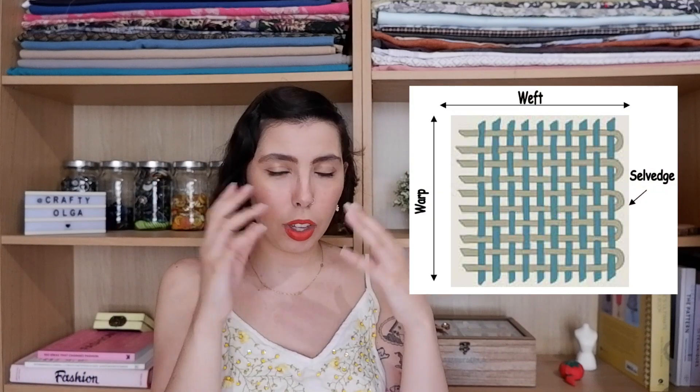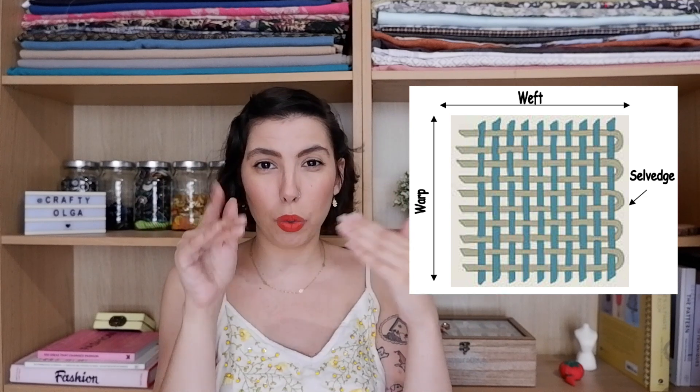Let's talk about weave types. The weave refers to how the threads are woven together to create the cloth, and just like with fibers, different kinds of weaves give different properties to your fabric. The weave is how the weft and the warp are interlaced. The warp is vertical and the weft is horizontal. It really doesn't seem like it would matter much, but there are a lot of different ways to weave yarns together and it really does change the properties of your fabric.